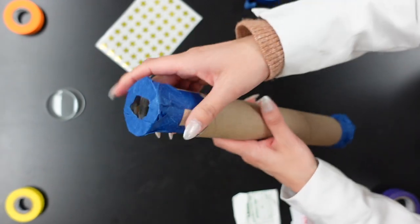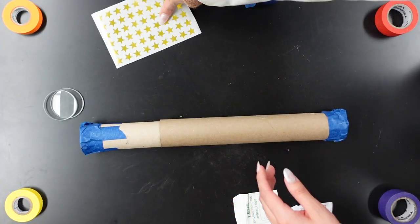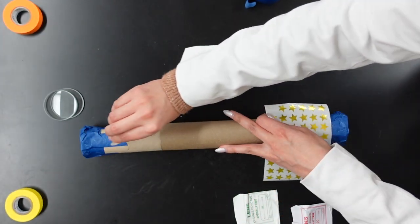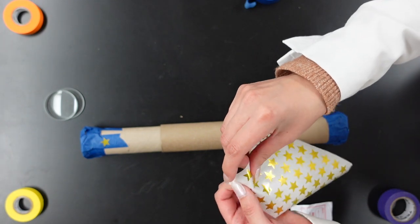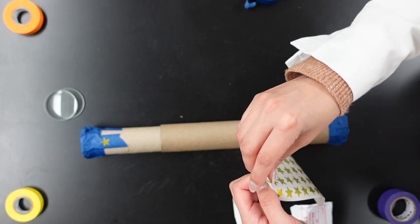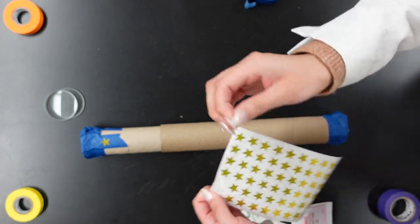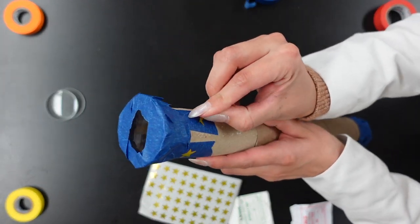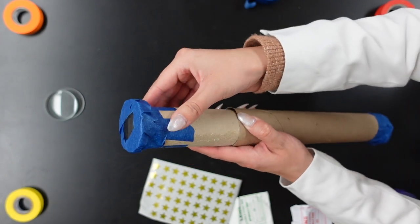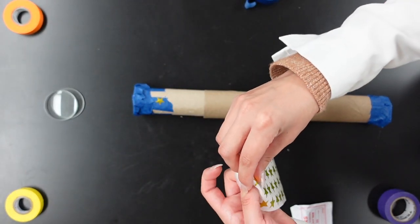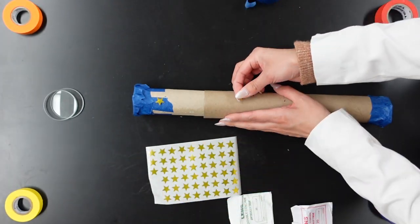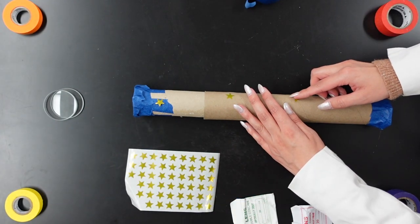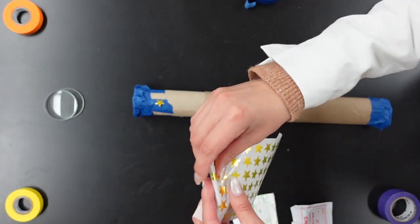Last but not least is to make it your own. I love stickers, so I'm going to put some stickers on my telescope. You can always use paints. Just make sure that you're not covering up any of the visibility on the lenses, but you can decorate it any way you like. You can use crayons, you can use paint. Markers are also a great option.